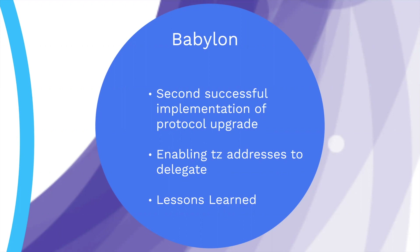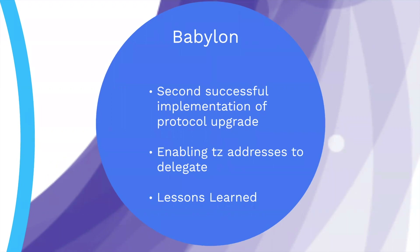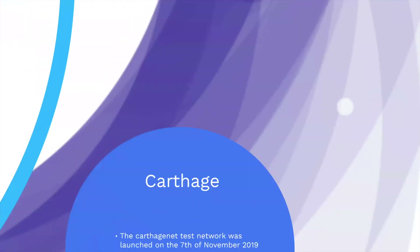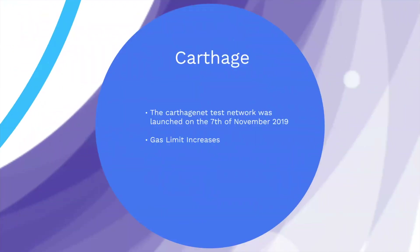That led to the third proposal, which was Carthage. That was more of a housekeeping, smaller proposal where we just fixed bugs and increased the gas limits so you can have more activity on contracts.